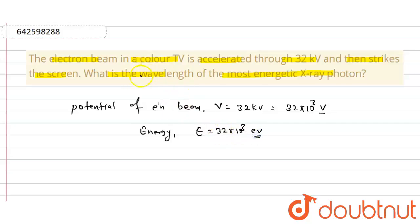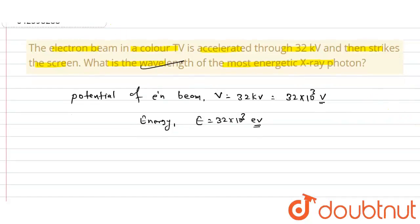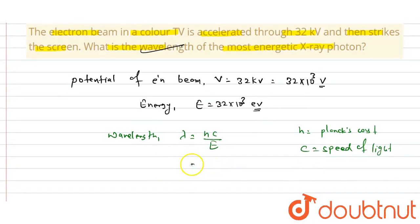So we have to find here the wavelength of the most energetic X-ray photon. The formula is given by wavelength lambda equals hC divided by E, where h equals Planck's constant and C equals speed of light, and E is the energy.